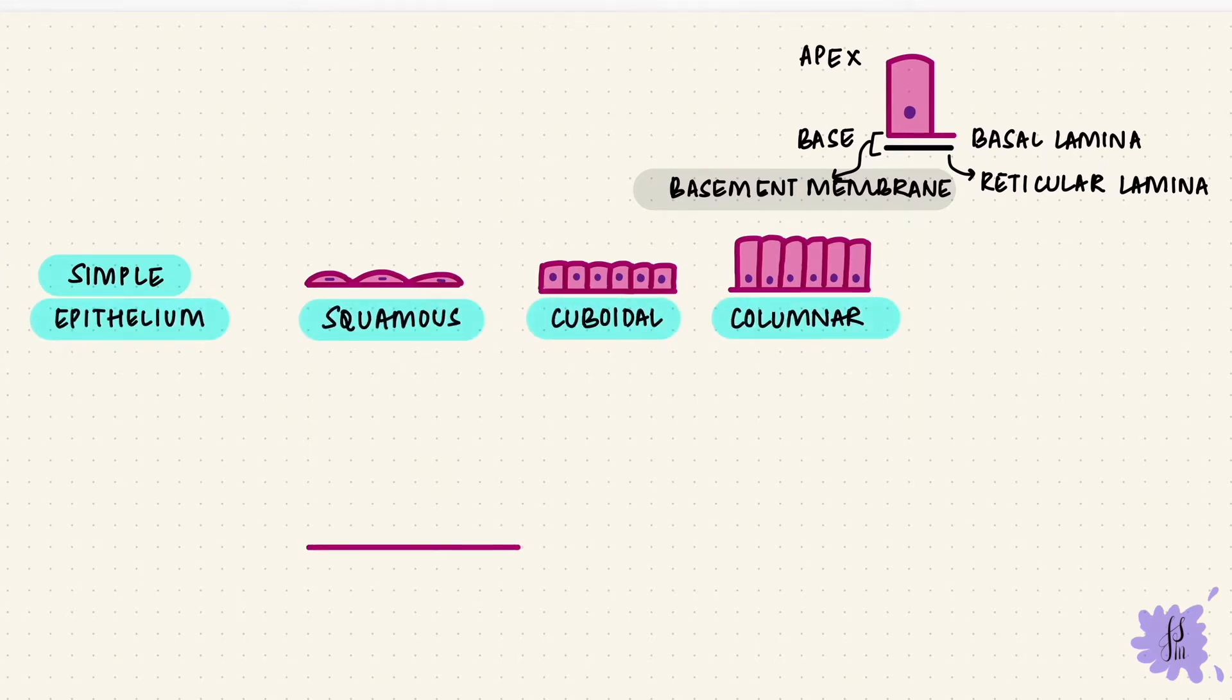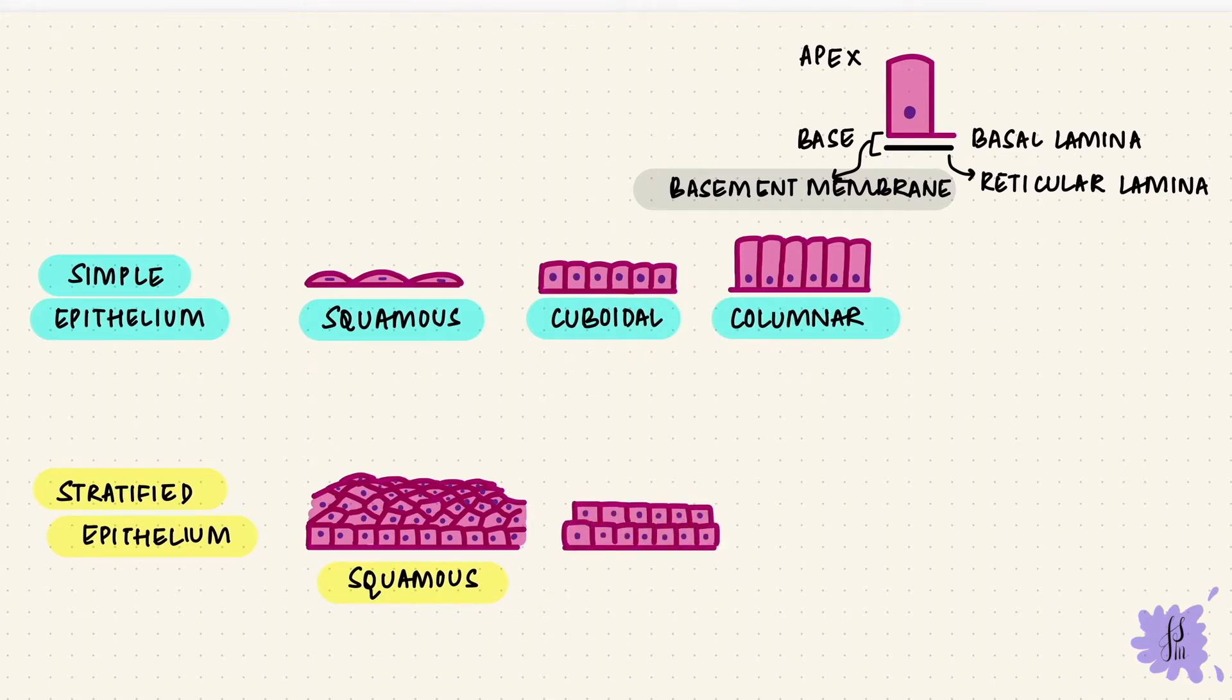If it's more than one layer, it's called stratified epithelium. Stratified squamous is the most common. Stratified cuboidal and columnar are rare.